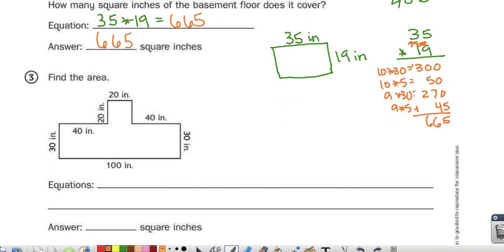Next, I need to find the area of this figure. I can break it up into different rectangles. The easiest way to break it up is probably going to be to break it up right here. So my first equation would be length 10 times width, 30 inches times 100 inches equals 3,000 square inches.